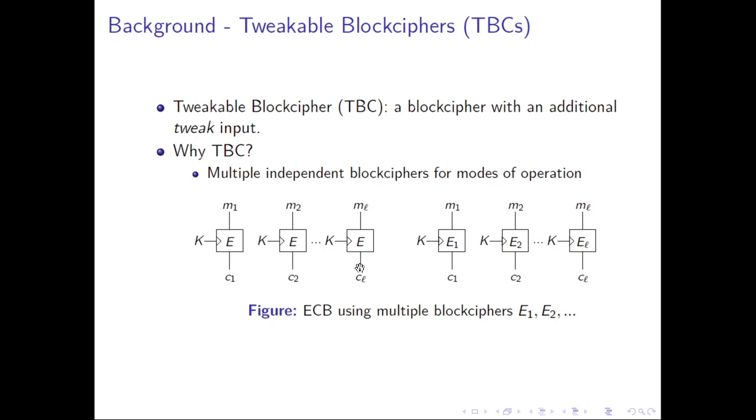About the motivation of the tweakable block cipher, it is from the need of some modes of operation. Because some modes want to have multiple block cipher instances. For example, let's see this figure. This picture is the famous ECB encryption mode, and we know it is bad. It is insecure because it preserves the plaintext pattern. For example, in these L message blocks, if M1 equals M2, then the ciphertext block C1 equals the ciphertext block C2, and we could notice this relation from the ciphertext. But if the L different message blocks are encrypted by L different block ciphers E1, E2 to EL rather than a single block cipher E, then it will be secure. But of course, we cannot have so many ciphers in practice to instantiate such a mode. But if we have a tweakable block cipher, we can use L different tweak inputs to get L different block ciphers, as we mentioned. So we could instantiate such a mode.